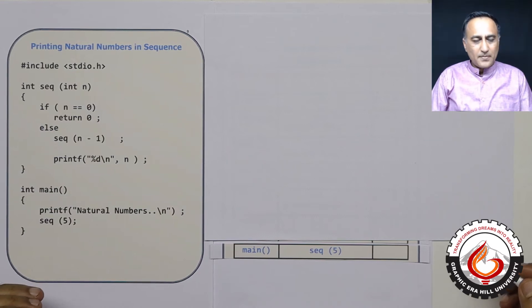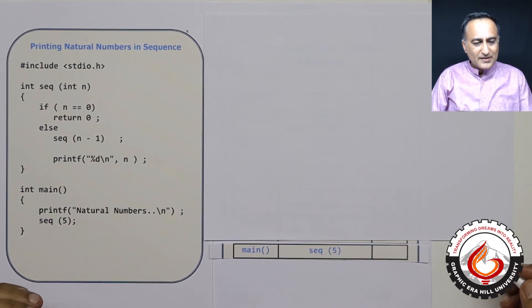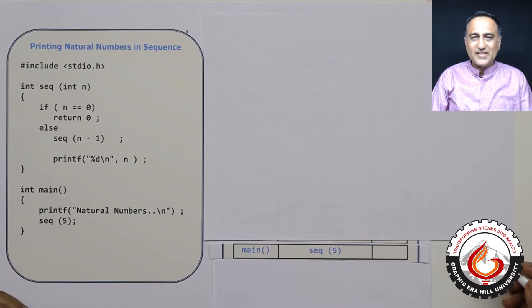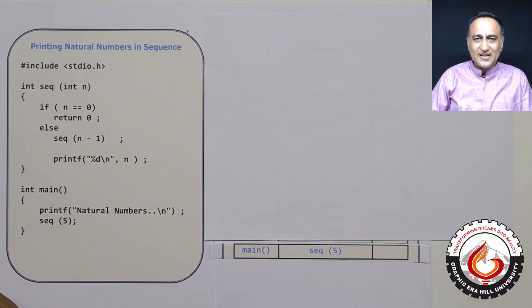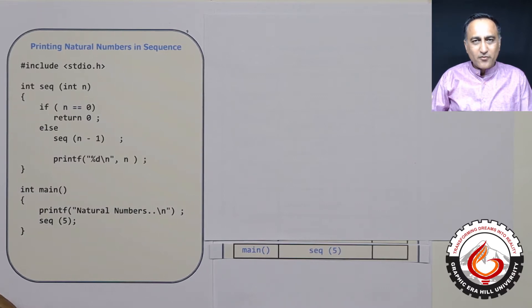In this program, I'm going to show you how you can print the natural numbers in a sequence. Let's say my input natural number is 10. I'm going to start printing from 1, 2, 3, 4, all the way till 10.